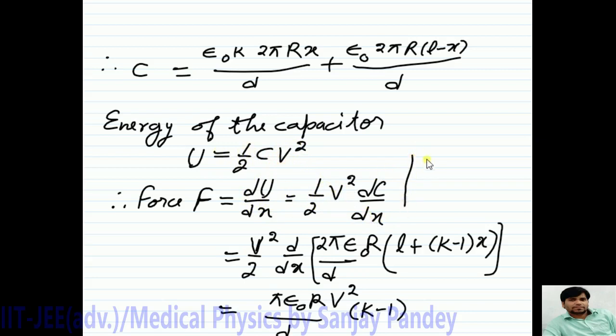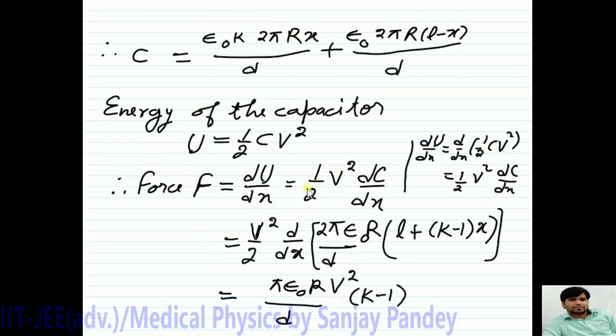So, dU upon dX will be equal to d upon dX half C V square as V is constant. 1 upon 2 is constant and C is variable DC upon dX. So, F will equal half V square into d upon dX of C. The value of C is this value. Taking 2 pi epsilon naught R upon D common from both steps we get this step.